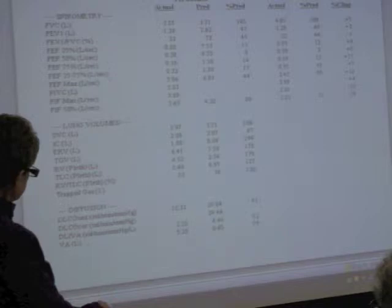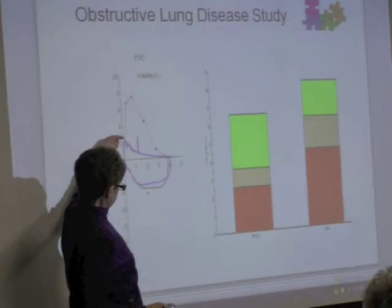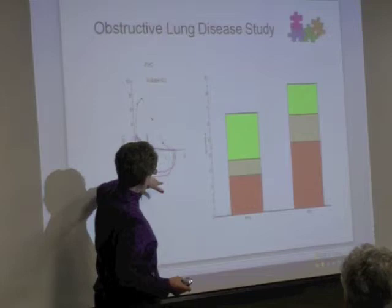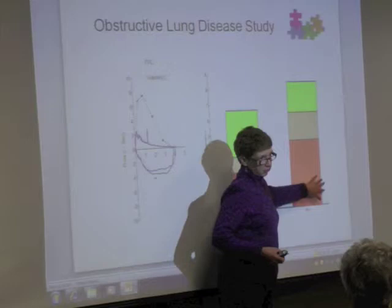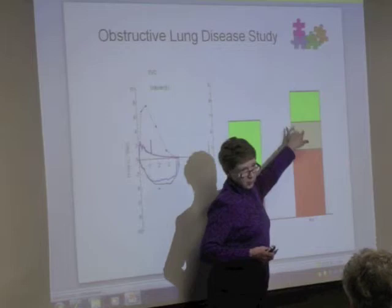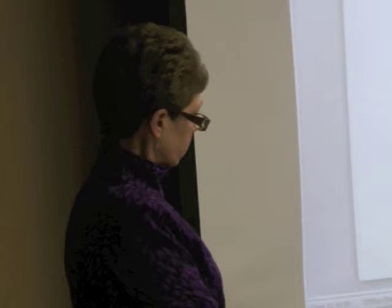This is the flow volume loop picture I showed you earlier, with the dotted line representing what a normal person his age should look like. He has a reduced peak flow and a concave expiratory curve, which is typical of obstructive lung disease. In the lung volume graphic, you can see that the functional part of his lungs is much smaller than his residual volume — the working part is dwarfed by what's trapped in there not doing any good.